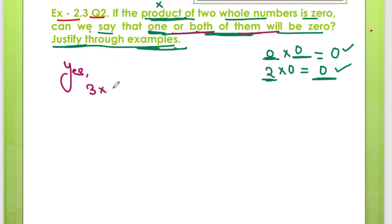Examples: 3 into 0 is 0, 9 into 0 is 0, 2 into 0 is 0. Right? So with this, we are done with this question.